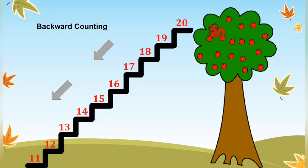Let us start counting backwards from 20 to 11. Children, you are going to say numbers with me. So, 20, 19, 18, 17, 16, 15, 14, 13, 12 and 11.